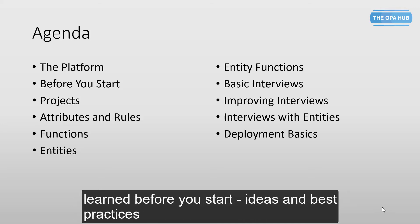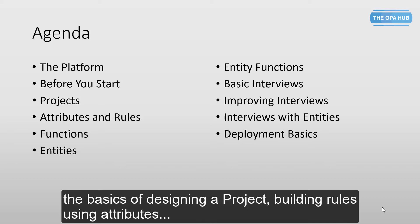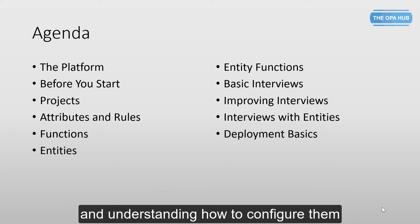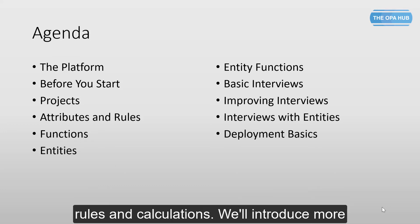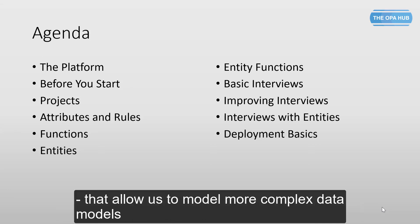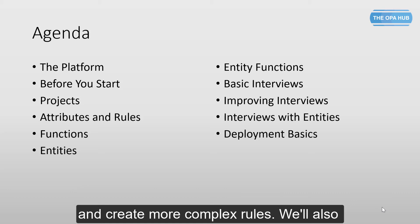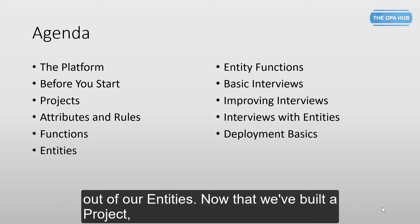Then we'll look at things that are best learned before you start — ideas and best practices to get your project up and running quickly. Once we've looked at the basics of designing a project, building rules using attributes and understanding how to configure them, we'll extend our reach and use functions to create more complex rules and calculations. We'll introduce more real-world scenarios when we talk about entities — those things that allow us to model more complex data models and create more complex rules. We'll also see how Oracle Intelligence Advisor functions let us get the most out of our entities.